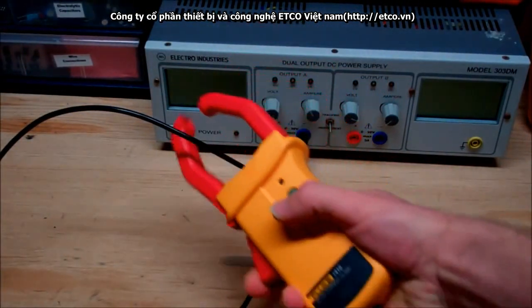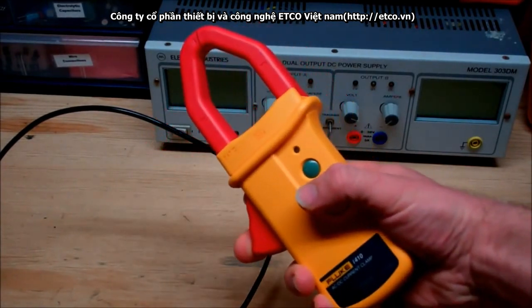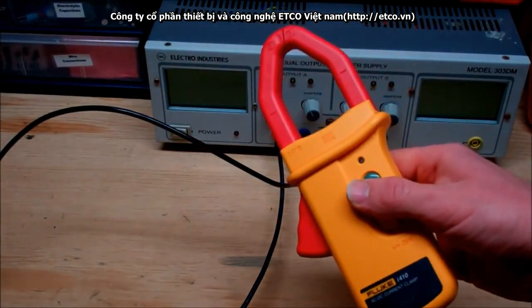Now what a current meter allows us to do is to quickly take a measurement of the current being induced through a wire. And this is an awesome little tool because you don't have to break the circuit in order to take measurements.